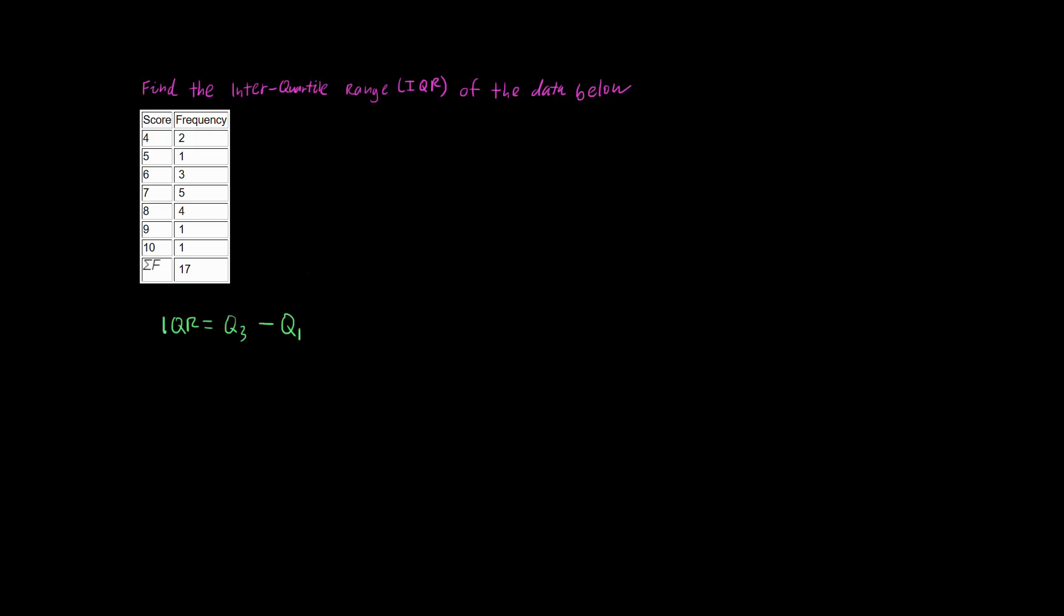So remember that the first quartile is at the quarter point of the data, and the third quartile is three quarters in. That's why they're named quartiles. There's one quarter, median is the second quartile, and then three quarters is the third quartile.